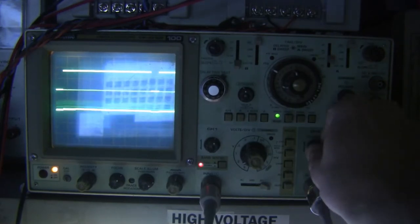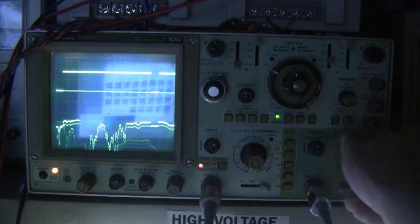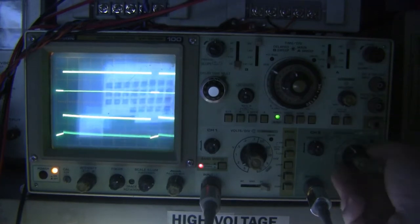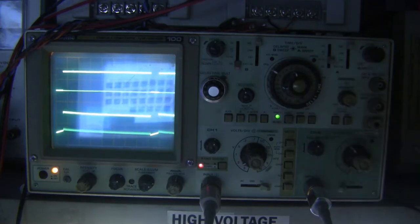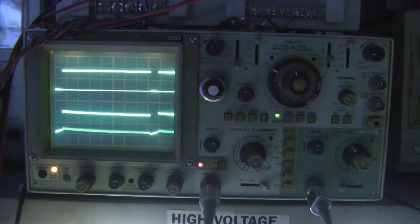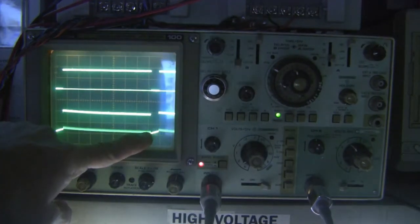I'm going to change the DC offset of the signal and we're going to turn up the gain so that we are now looking at 20 volts per division on the second trace. Yes, there is some distortion here.